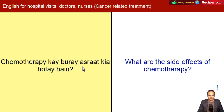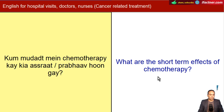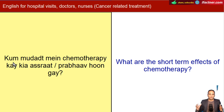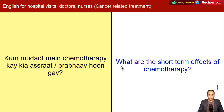Chemotherapy ke baad ke buray asaraat kya hote hain? What are the side effects of chemotherapy? Chemotherapy ke short term effects bhi ho sakte hain aur long term bhi - 3, 4, 5 saal ke baad bhi effects ho sakte hain. Toh doctor se patient pooch sakte hain: What are the short term effects of chemotherapy?